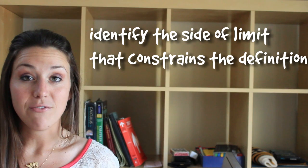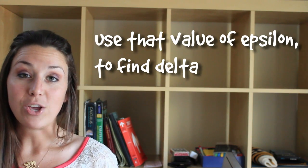To complete this problem, we'll identify the side of the limit that constrains the definition, and then use that value of epsilon to find delta. Let's take a look.